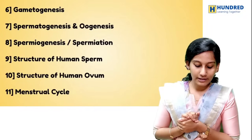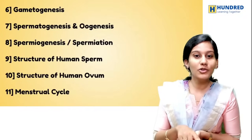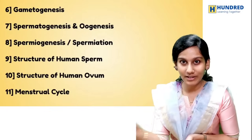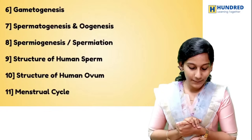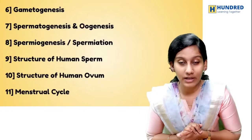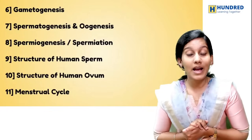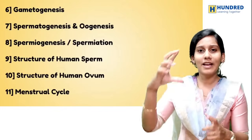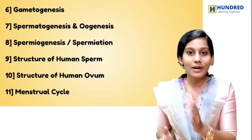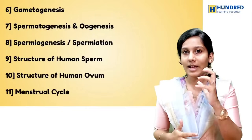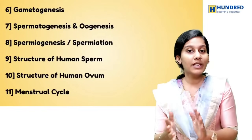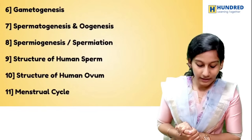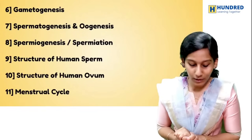Study the flow chart carefully. Also cover the difference between spermiogenesis, spermatogenesis, and spermiation. The structure of the human sperm can be asked as a 5-mark question — draw the diagram and write a few explanatory points. Also study the structure of the human ovum.